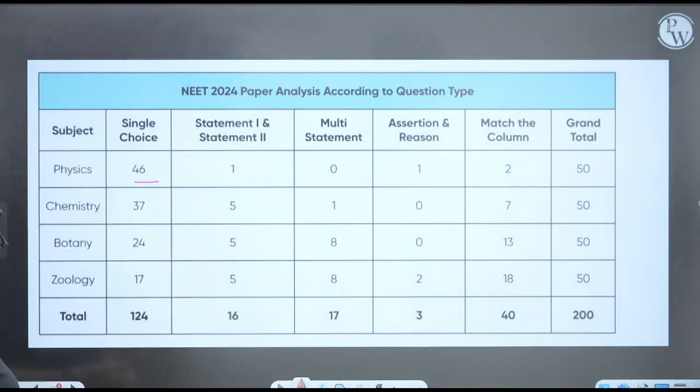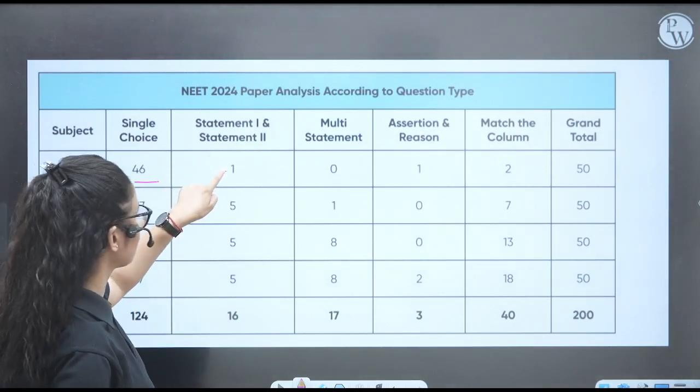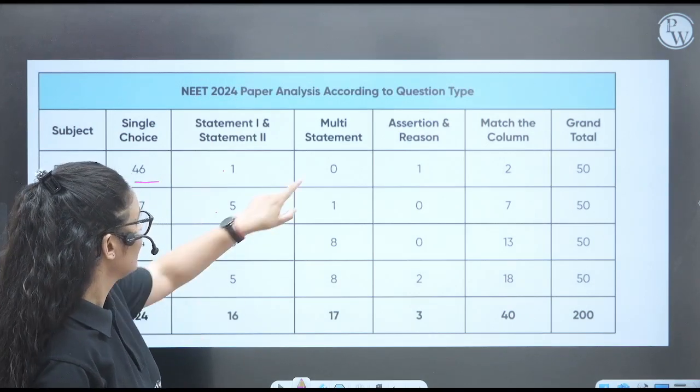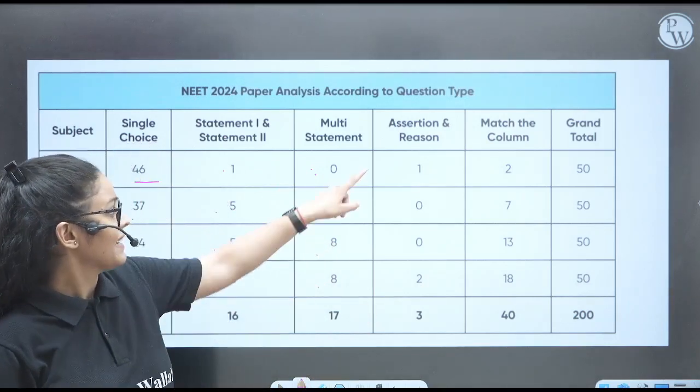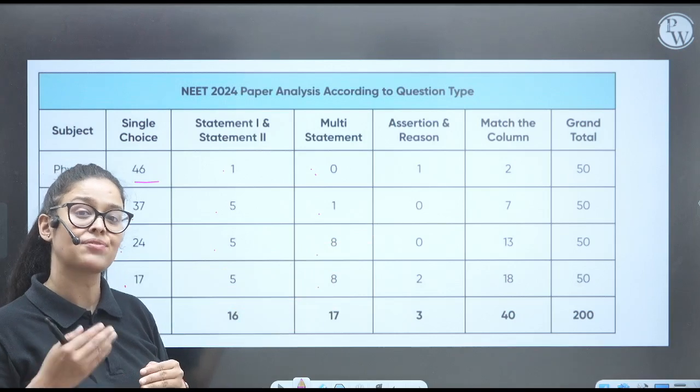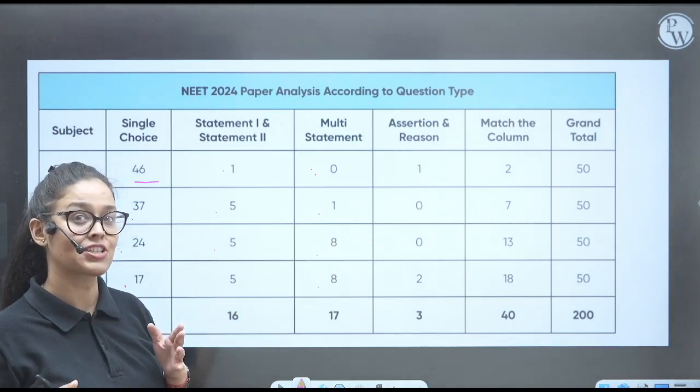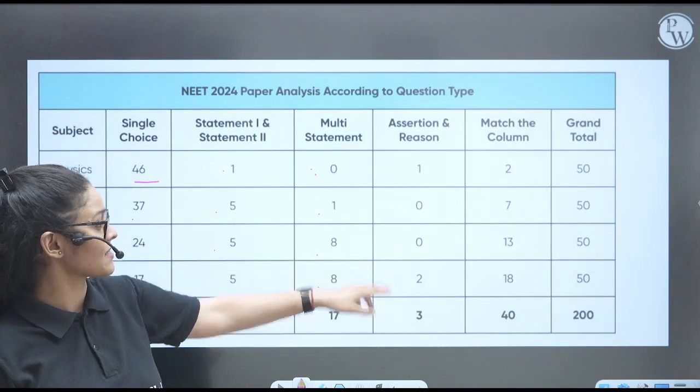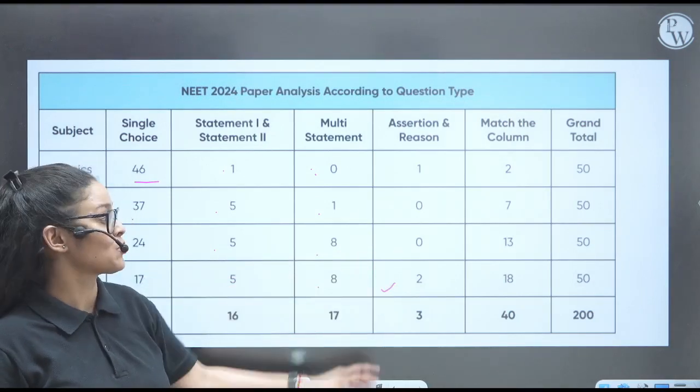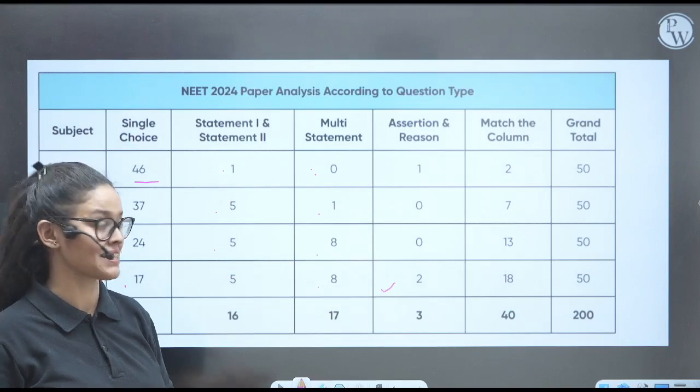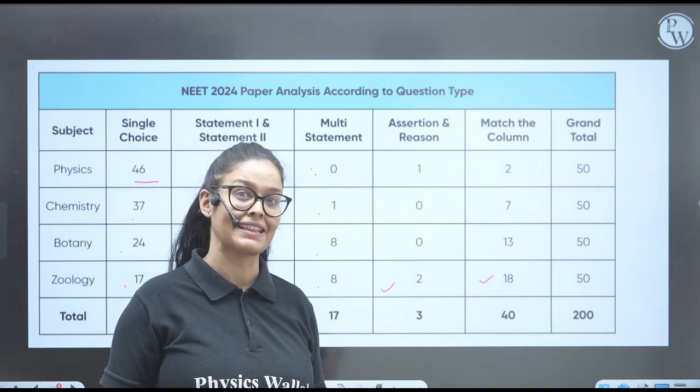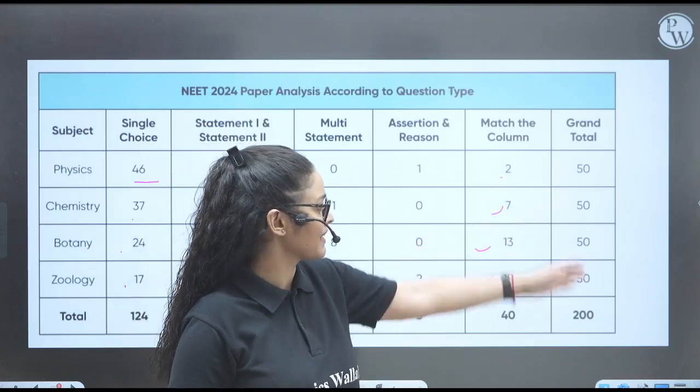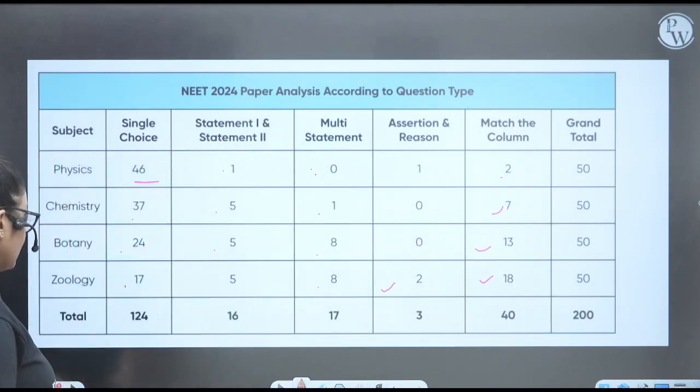Now we will see what kind of questions they have asked, what type of questions you should practice. So in physics they have asked single type 46 single choice questions: 37, 24, 17. Statement-based only 1, 5, 5, 5 questions. Multiple statement-wise questions: in physics 0 questions, 1, 8, 8. Assertion - see, they have asked many questions. That's why the paper was lengthy because they have given many questions on multiple statement, right? Next is assertion reason. So in zoology they have asked two assertion reason. Assertion reason in physics they have asked only one type. Match the column - many questions were from zoology match the column, and that's why paper was lengthy in biology, no? 13 here, 7, 2, and grand total you can see all 50 questions.